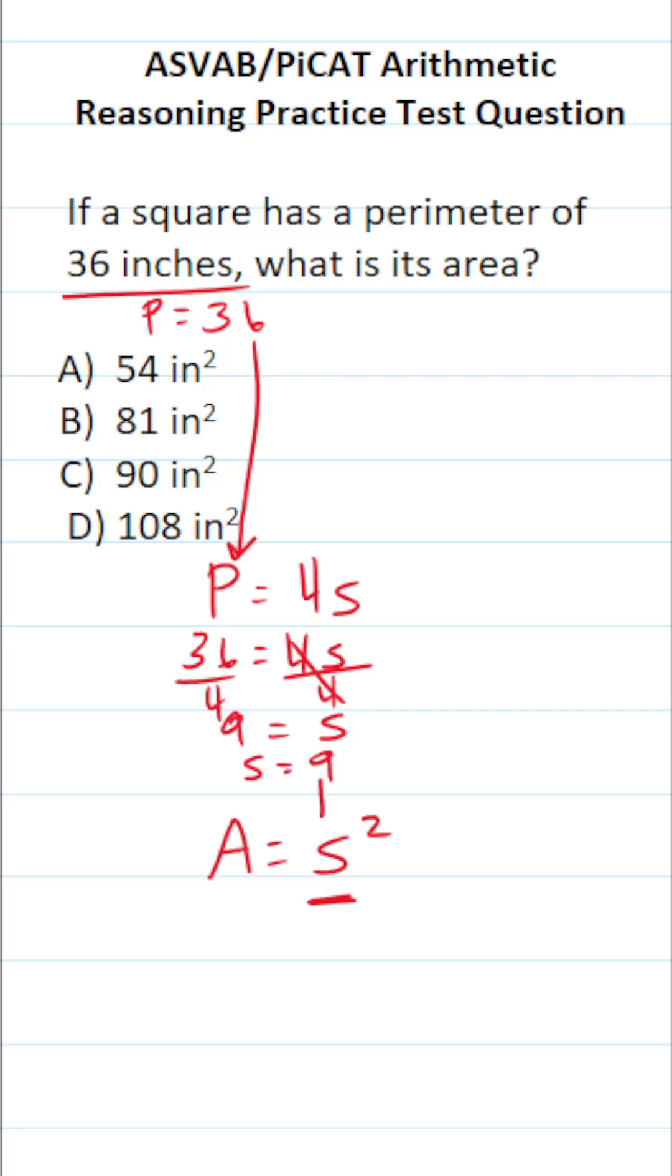Now that we know what S is, we can go ahead and plug it into the area formula. Area equals 9 squared. 9 squared is the same thing as 9 times 9 or 81. In other words, the area of this square with a perimeter of 36 inches is B, 81 square inches.